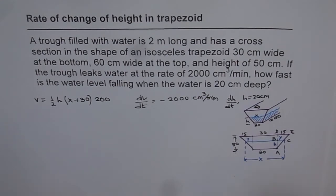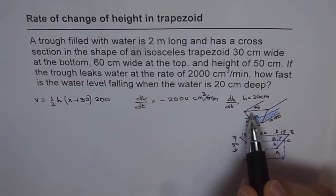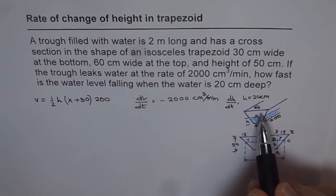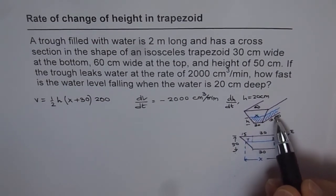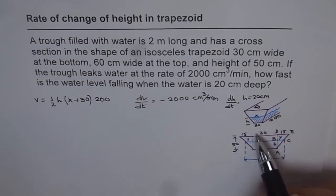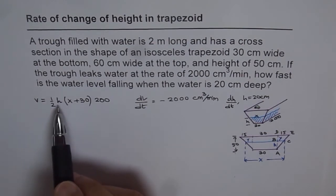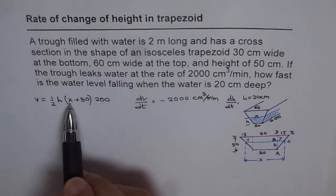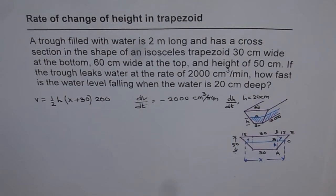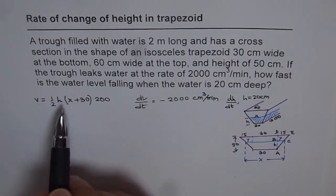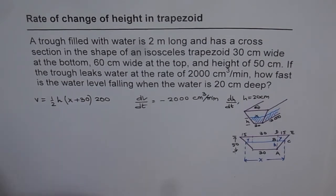We have a formula for volume: cross-section area of the isosceles trapezoid is half h times (x + 30), and volume equals that times 200 centimeters. We can differentiate volume with respect to time to get dV/dt, but there is a term x here which makes things difficult. So what we need to do is write x in terms of h — that is the major thinking problem.